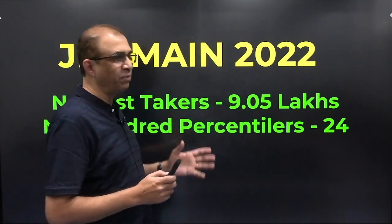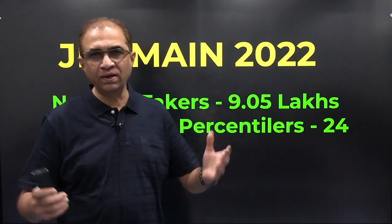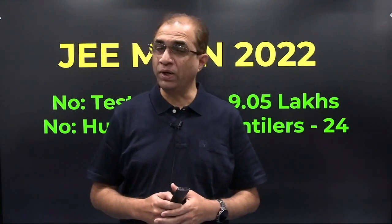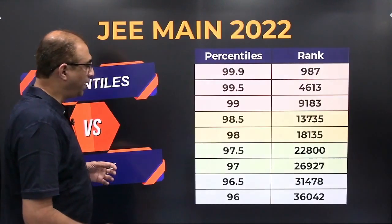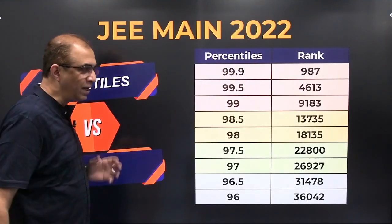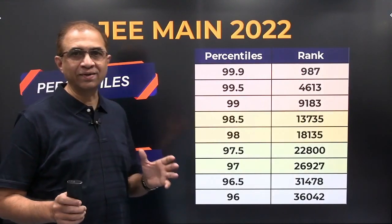Why is this important? Because approximately one percentile drop will correspond to something like around 9000 ranks, and we will see that when we discuss the mapping between percentiles and ranks. So 9.05 lakh unique test takers this year for JEE Main 2022. And we all know the number of 100 percentilers — 24 this time.